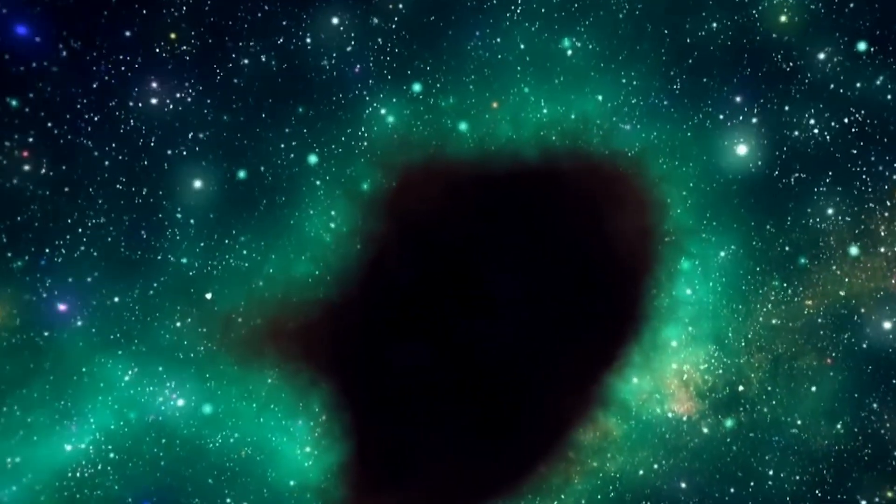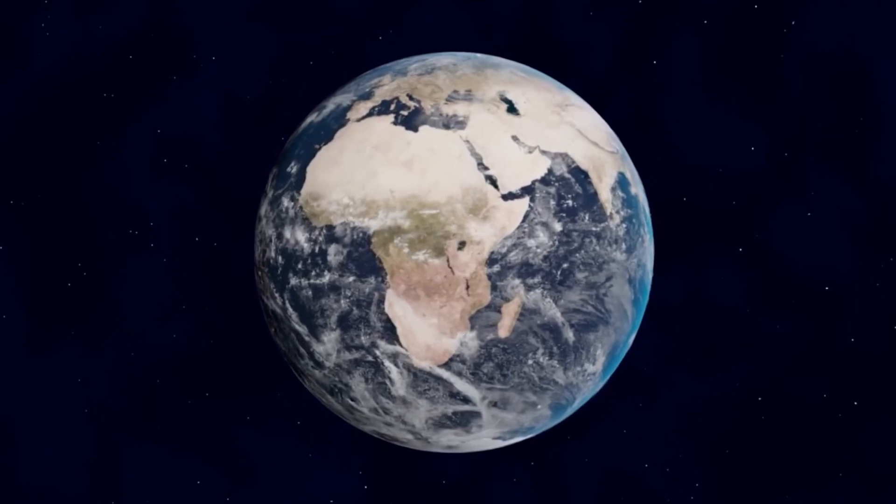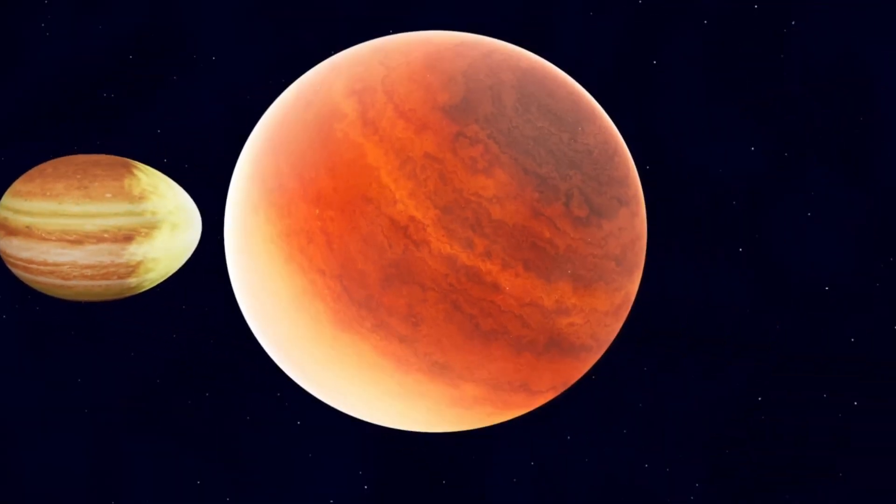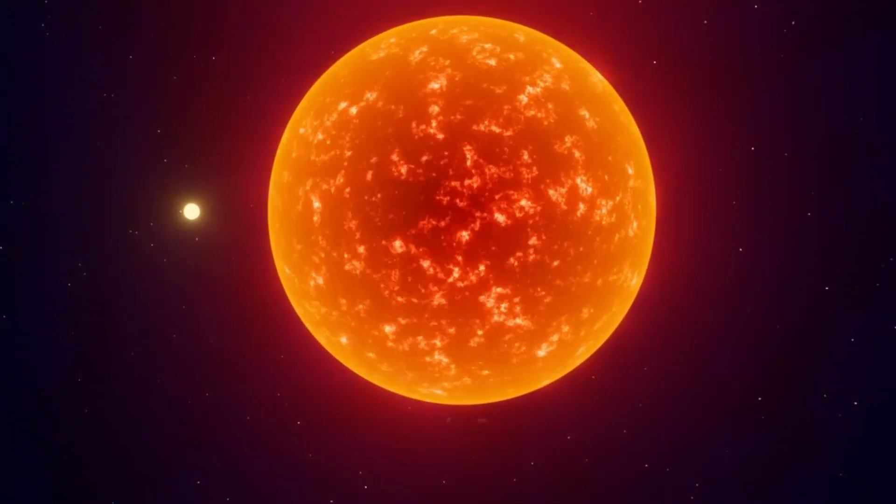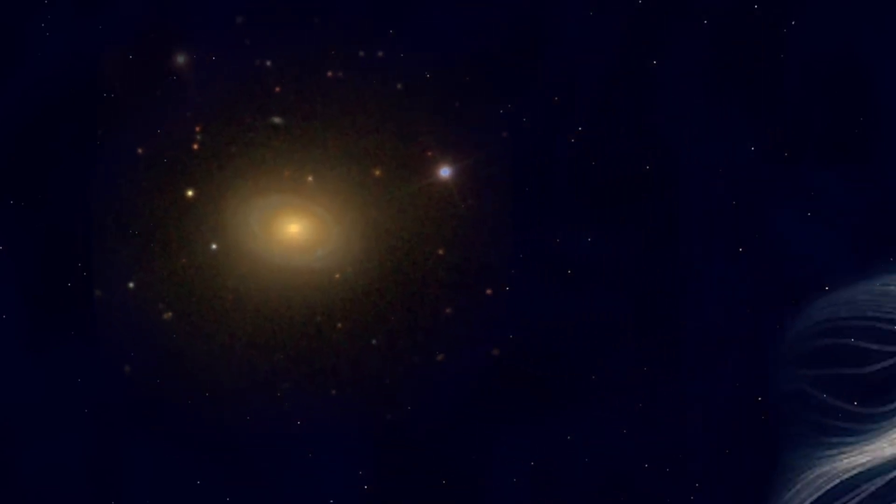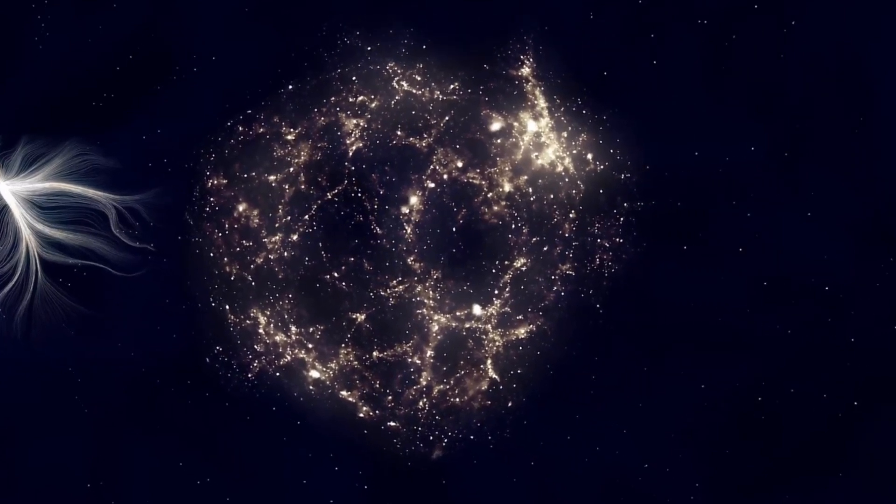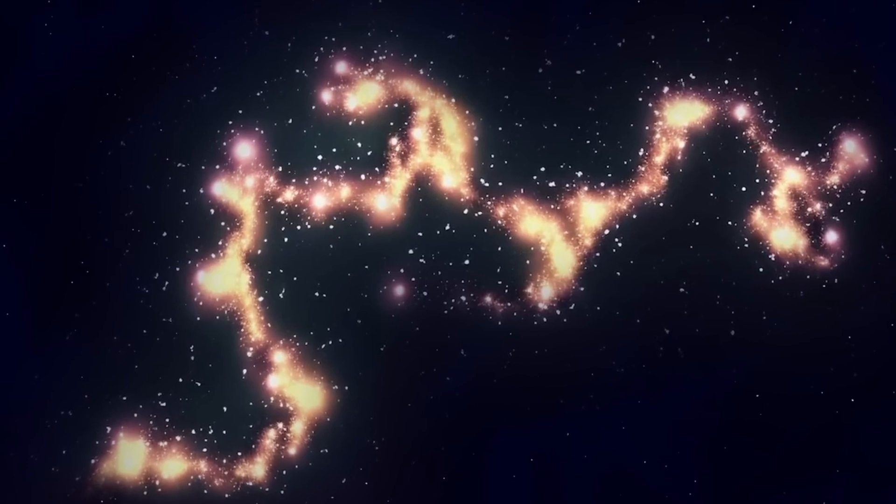But if the Laniakea Supercluster is grand, the Hercules-Corona Borealis Great Wall is truly mind-boggling. This is currently the largest known structure in the universe, spanning over 10 billion light years across. The Great Wall is so vast that it's almost impossible to conceive its size in human terms. This structure is roughly 95,000 times larger than our Milky Way.